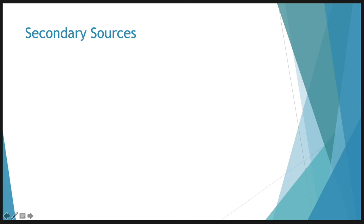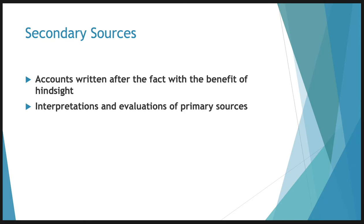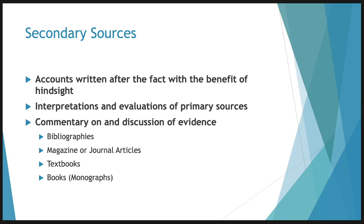Our next type of source is secondary sources. Secondary sources are accounts written after the fact with the benefit of hindsight. They are interpretations and they include evaluations of primary sources, but they can also be interpretations and evaluations of other secondary sources. The key feature of a secondary source is that it comments on and discusses evidence. Secondary sources can include bibliographies, magazine or journal articles, some textbooks, and also scholarly books or monographs — books that make academic arguments about sources.